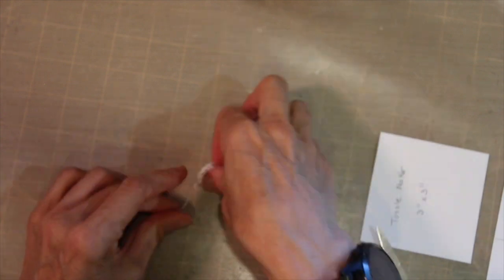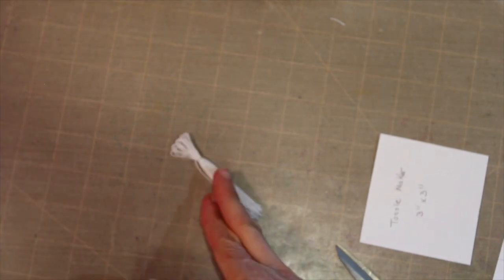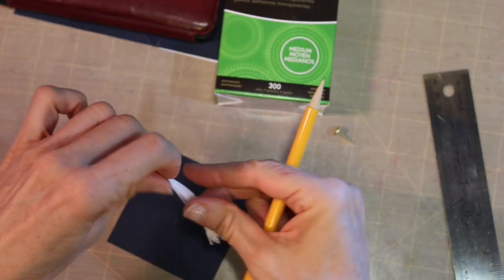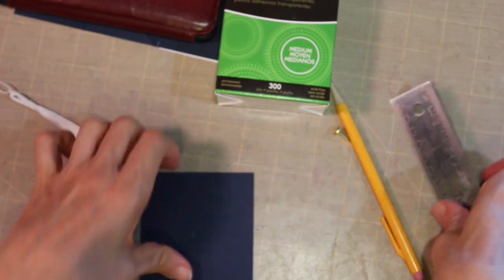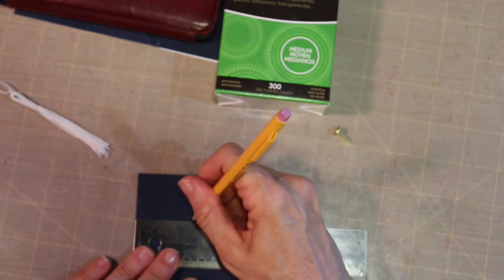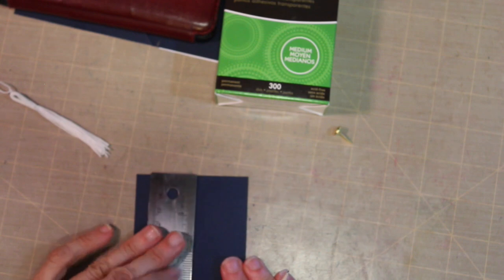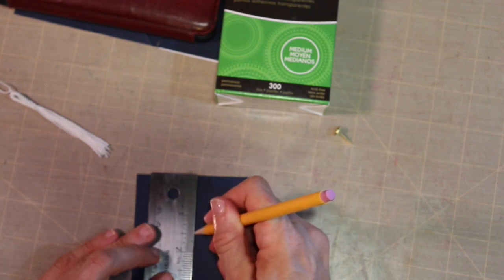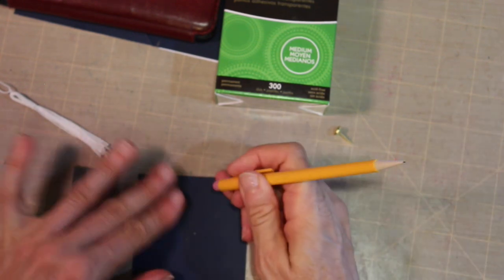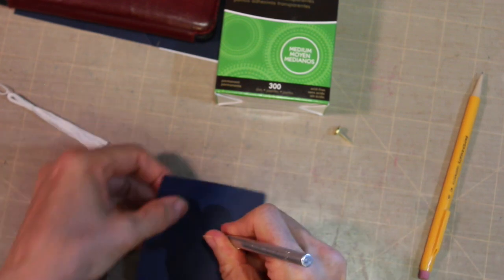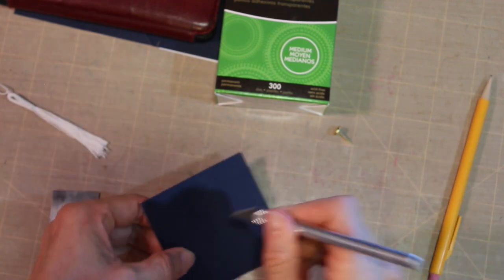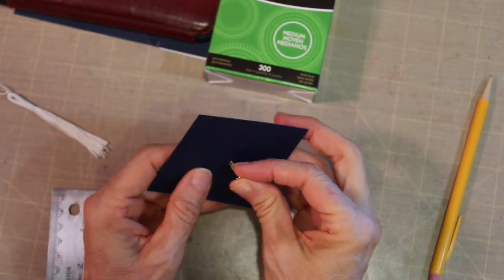So now I'm going to secure the tassel onto the top of the card. I'm going to just mark in the middle there, and I'm going to cut a little hole. I've got a little gold brad that I'm going to use to hold the tassel down. So once I get a little bit of a hole in there, I can make the hole a little bit bigger with the brad and put the tassel inside.